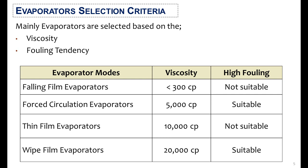For thin film evaporators, viscosity can be on the high side at 10,000 cp, but they are also not suitable for high fouling material. For cases of very high viscosity and high fouling, wiped film evaporators can be used in the process industry.